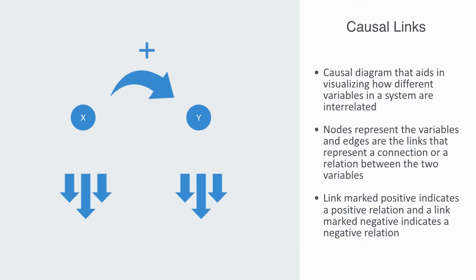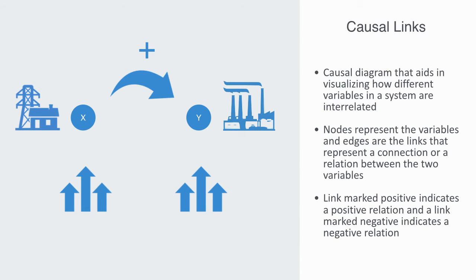That is to say, if the node in which the link starts decreases, the other node also decreases. Similarly, if the node in which the link starts increases, the other node increases as well. An example of this might be the relation between manufacturing output and electrical consumption within an economy. They will both move together. The more of one, the more of the other.